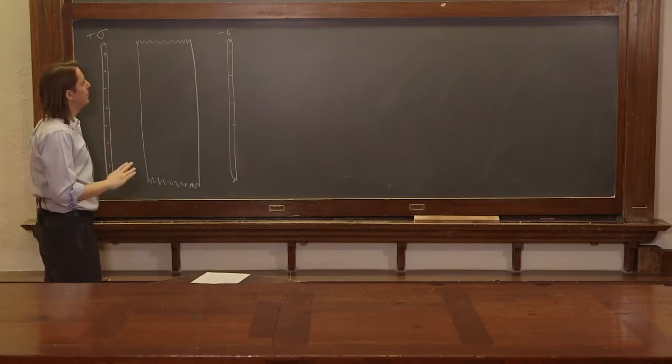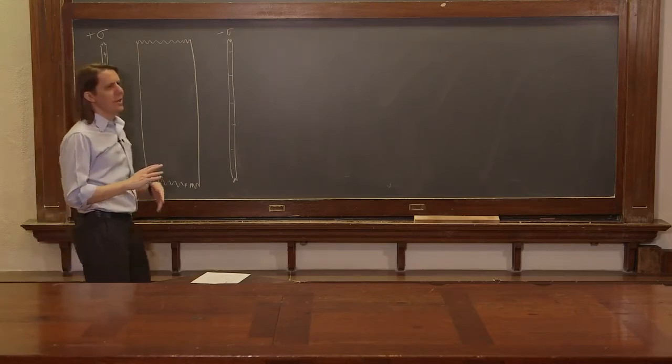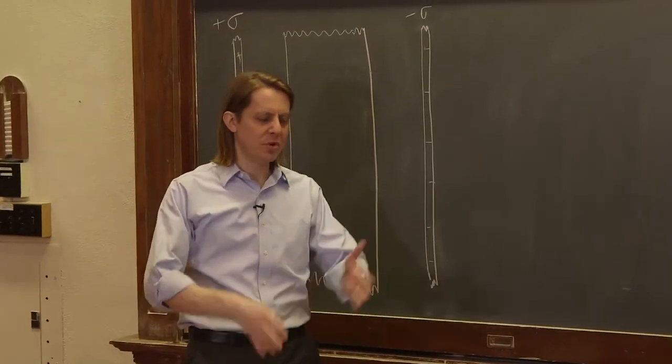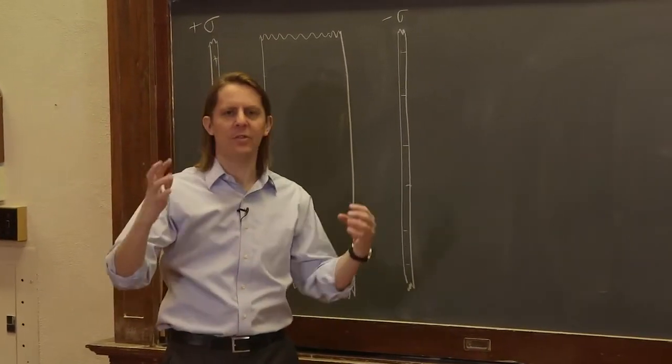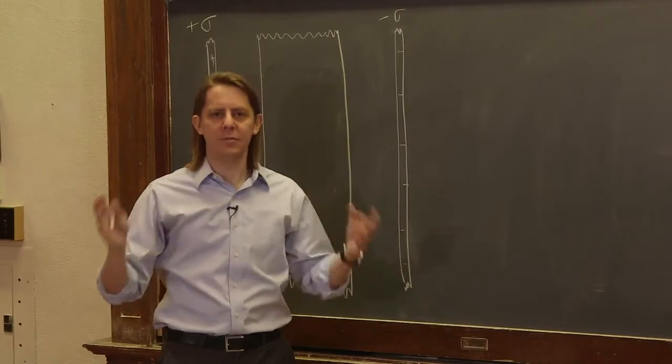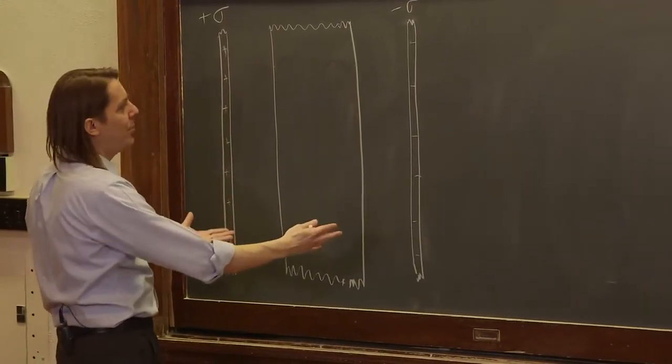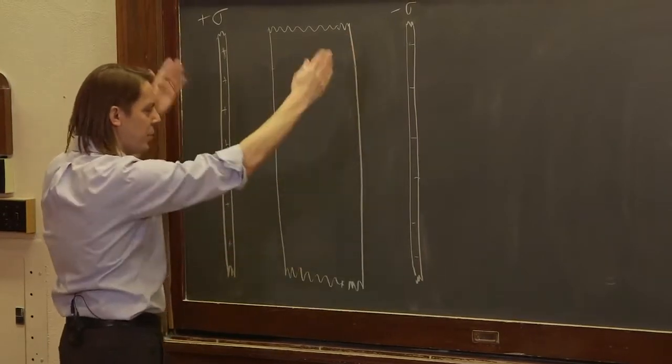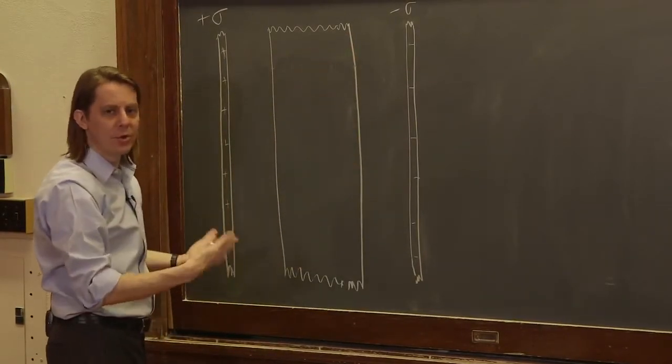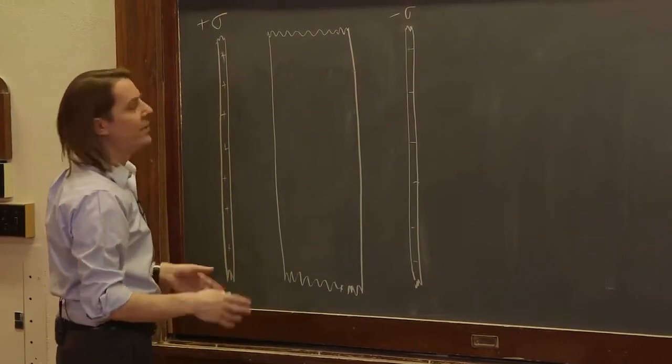So first let's do free charge. Free charge is usually the excess charge that you put on a conductor or you just place in space that causes the effect you're studying. So in this case, what created this whole problem is the fact that we put these two charge planes here to create the original external field. So that's the free charge.